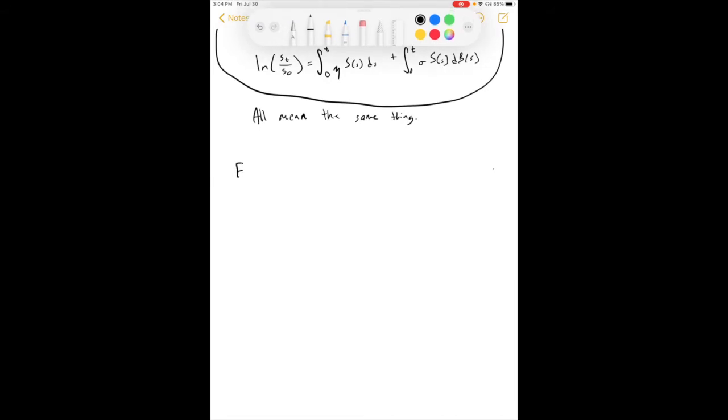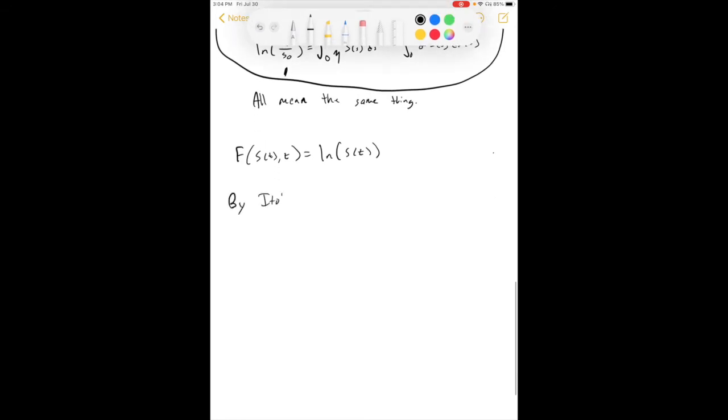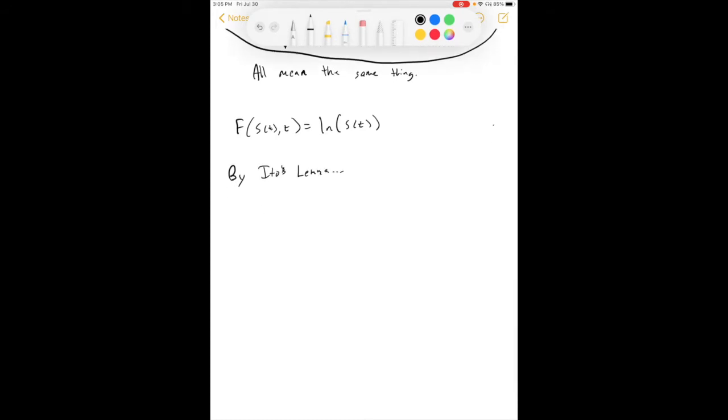So in this, we have a function f of S of t and t which is the natural log of S of t. And by Ito's lemma, df is equal to the derivative of f with respect to S, dS, plus one half b, which is the function of S of t and t squared, times the second derivative of f with respect to S, dt. Hopefully you remember that from the Ito's lemma video.